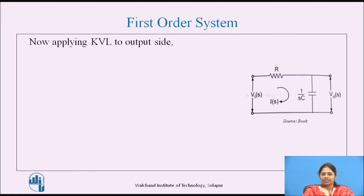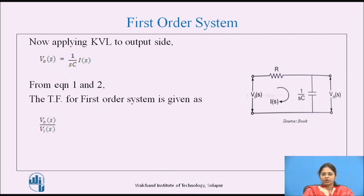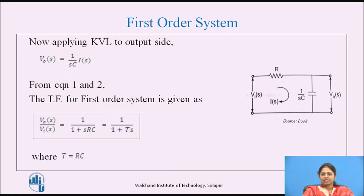Applying KVL to the output side, we get V_O(s) = (1/Cs)·I(s). This equation is marked as 2. From equations 1 and 2, solving V_O(s)/V_I(s), the transfer function for the first order system is V_O(s)/V_I(s) = 1/(1 + s·RC). This equation can be rewritten as 1/(1 + Ts), where T = RC.